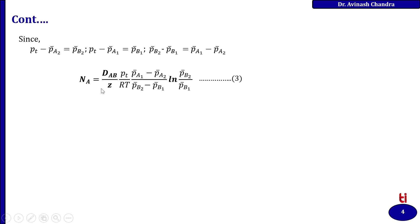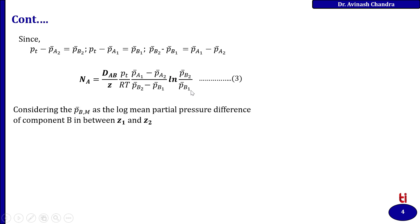By substituting this value into equation 2, then N = (Dab / Z) × (Pt / RT) × (Pa1 − Pa2) / (Pb2 − Pb1) × ln(Pb2 / Pb1). This is equation 3. The quantity (Pb2 − Pb1) / ln(Pb2 / Pb1) can be replaced by the Pbm.